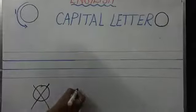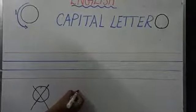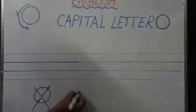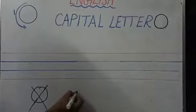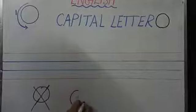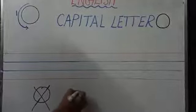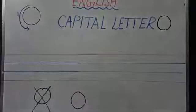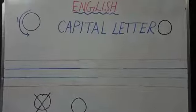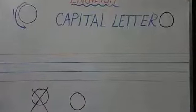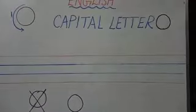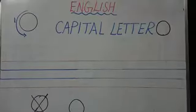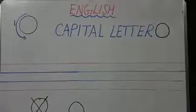Now this is the starting point. Start from here and turn towards your left, make a circle, and stop again at the same point. What is this letter called? Capital letter O.